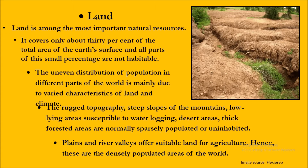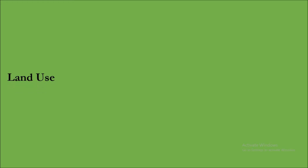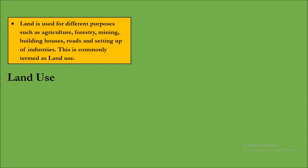Now let us find out what are the uses of land and how do we use it. Land is used for different purposes: agriculture, forestry, mining, building houses, roads, and setting up of industries. This is commonly termed as land use.